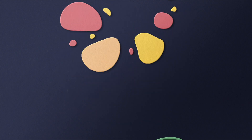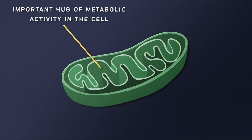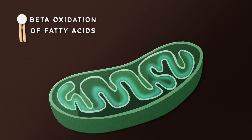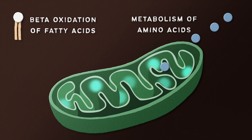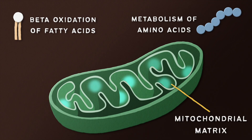Mitochondria are also important hubs of metabolic activity in the cell. Metabolic processes including beta-oxidation of fatty acids and the metabolism of amino acids occur in the mitochondrial matrix.